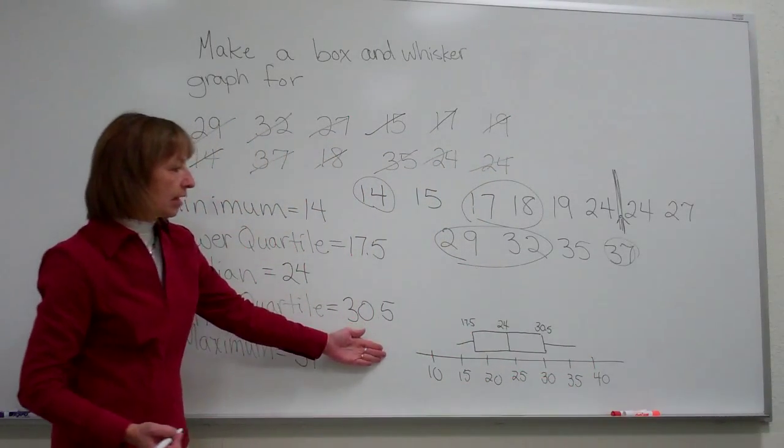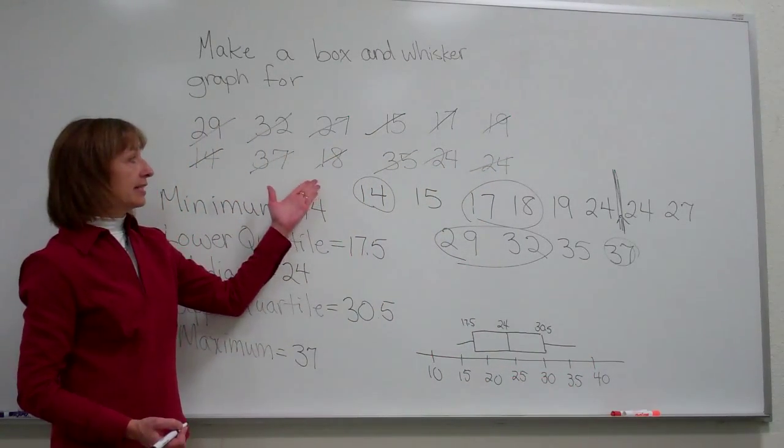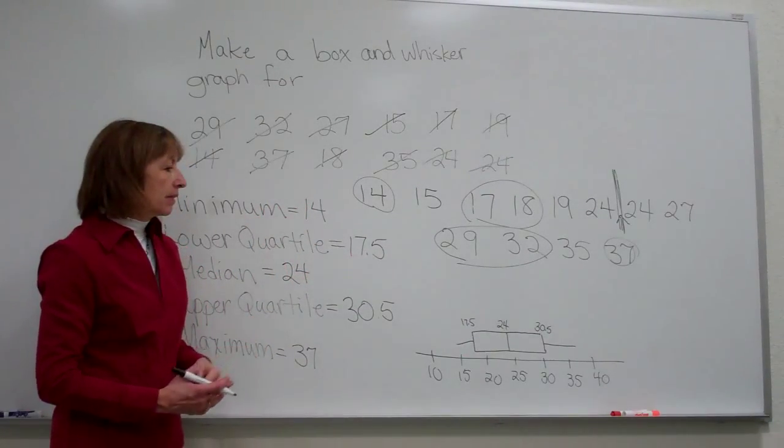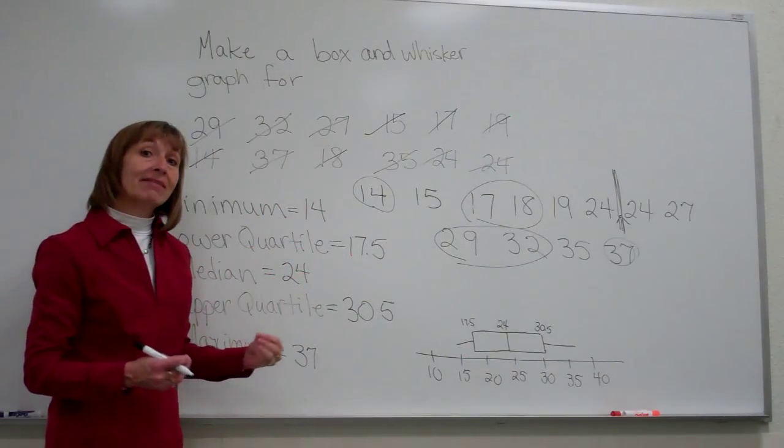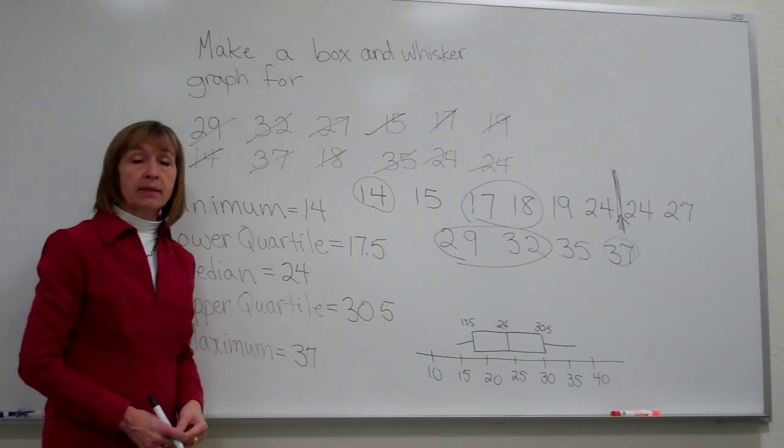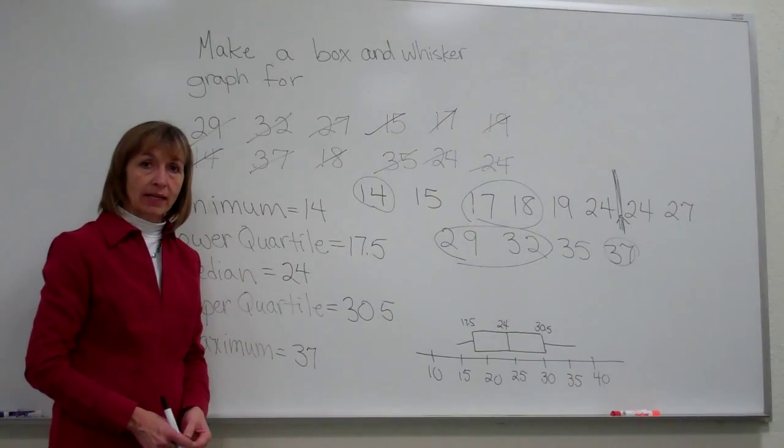Here is our box and whisker plot for this data set. I want to make a statement that this data set did not have any outliers. In another segment, we'll look at a box and whisker plot that might have outliers.